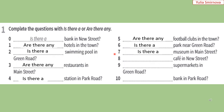7. Is there a museum in Main Street? — Чи є на Main Street музей? 8. Is there a cafe in New Street? — Чи є на New Street кафе? 9. Are there any supermarkets in Green Road? — Чи є на Green Road супермаркети? 10. Is there a bank in Park Road? — Чи є на Park Road банк?